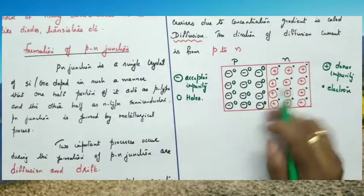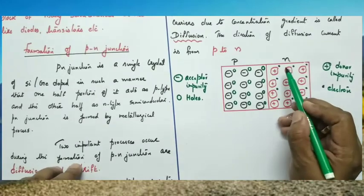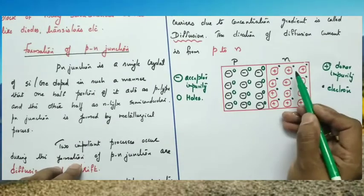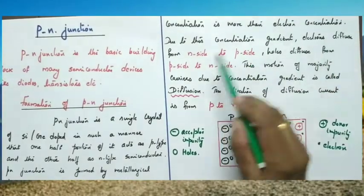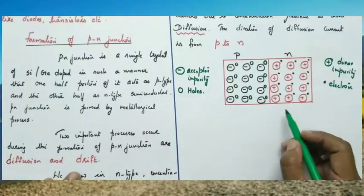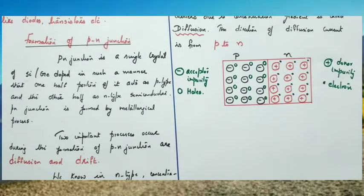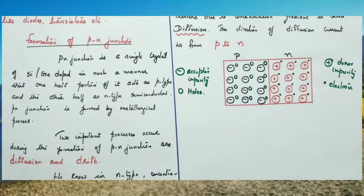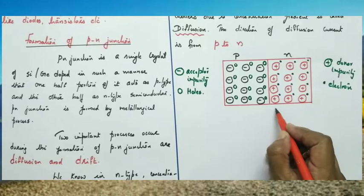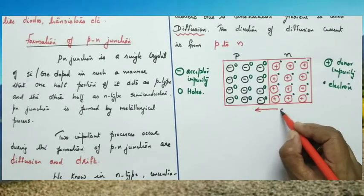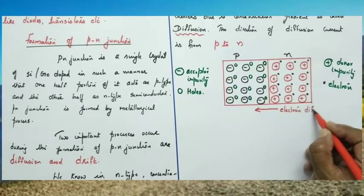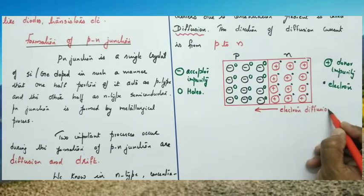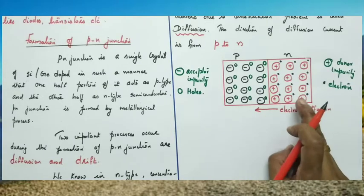Now, electrons — the majority carriers — move from the N region to the P region. Due to the concentration gradient, electrons diffuse from the N side to the P side. This direction from N to P is the direction of electron diffusion.